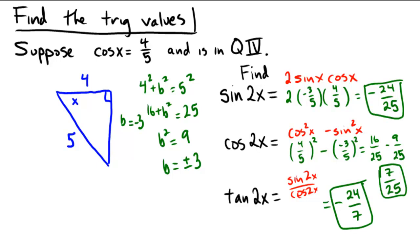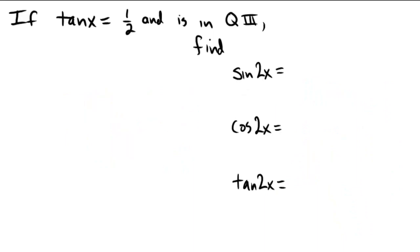So why don't you pause the video and try this one on your own. The tangent of x equals 1 half and is in quadrant 3. Find the double angle of the sine, or the sine, cosine, and tangent of the double angle. So when you pause and give it a shot here.